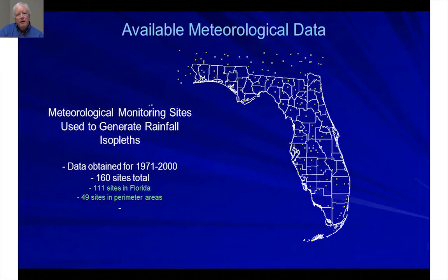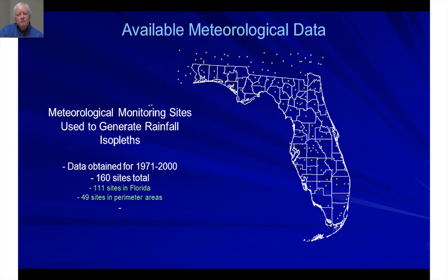The first step in evaluating the rainfall data in Florida was to develop all of the available meteorological data. Looking back at historical data, there are about 111 sites within the State of Florida that have collected rainfall data historically.